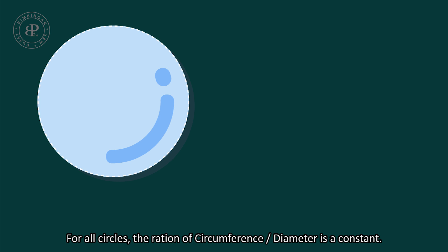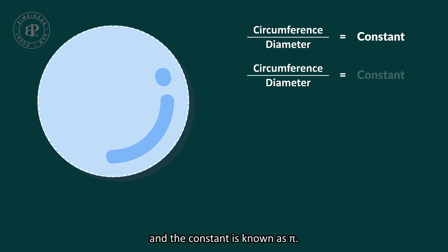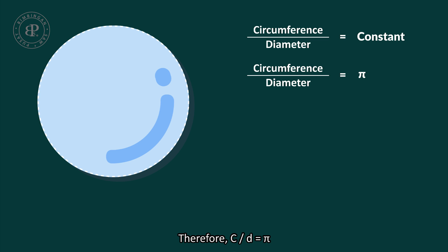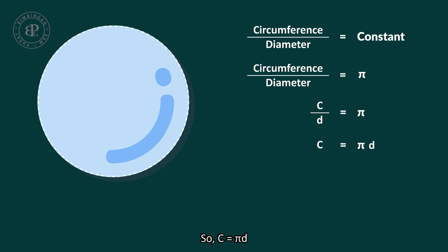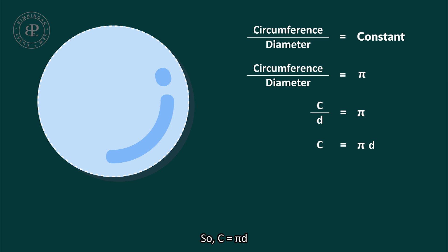For all circles, the ratio of circumference over diameter is a constant, and the constant is known as pi. Therefore, circumference over diameter equals pi, so c equals pi d. Or, c equals 2 pi r, because diameter is equal to 2 times radius.